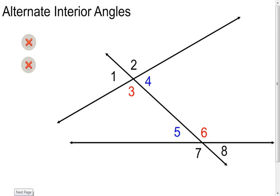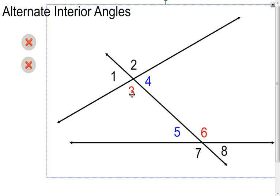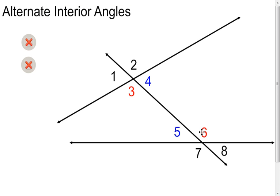The next type of angle pairs are alternate interior angles. Interior angles gives part of it away — we have to find angles that are on the inside, the angles inside the two lines. There are four angles inside the two lines. The alternate tells you to flip-flop from one side of the transversal to the other, and also flip-flop from one line to the other. Starting with angle three, the other side of the transversal gives angle four and angle six, but flipping to the other line gives angle six. So angle three and angle six are alternate interior angles. When you look at angle four, angle five is the other alternate interior angle. So angle four and angle five are alternate interior angles.